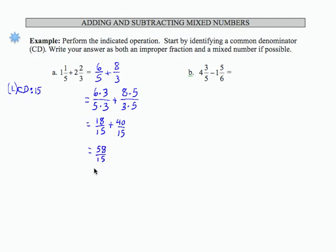That is my improper fraction result. If I want to write a mixed number, I'm going to take 15 and divide it into 58. That's going to go 3 times. That's 45. Then if I subtract 45 from 58, I get 13 over 15, and this is my final result.